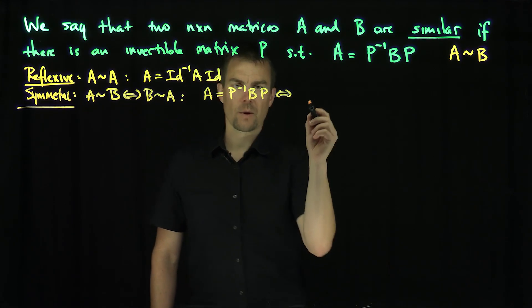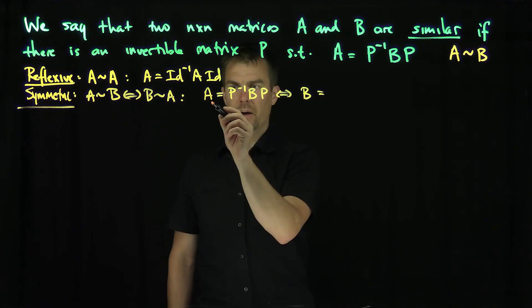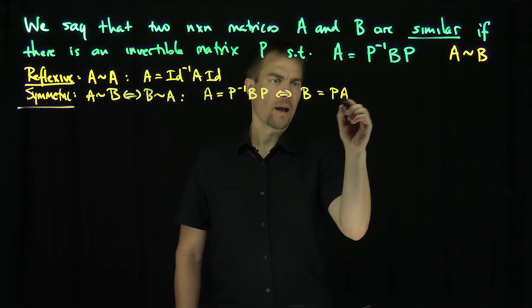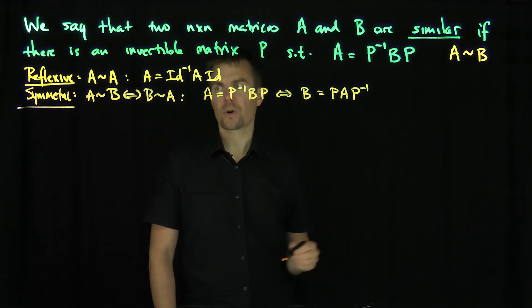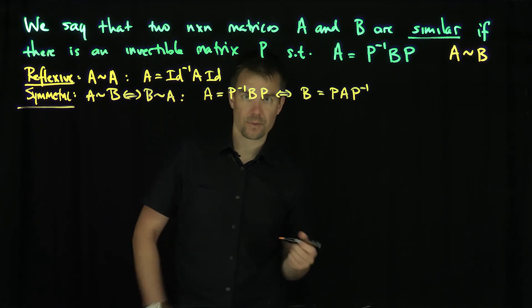which is equivalent to saying that B equals P A P inverse. In other words, replace P by P inverse and you get the symmetric relationship.